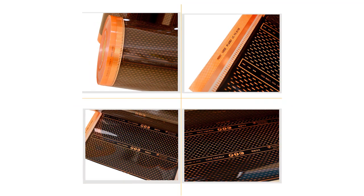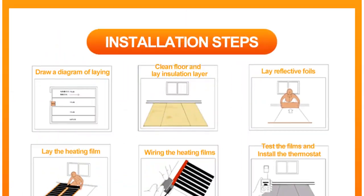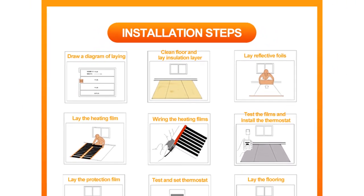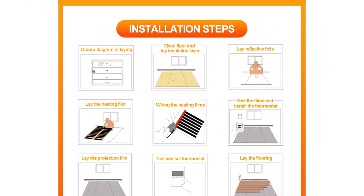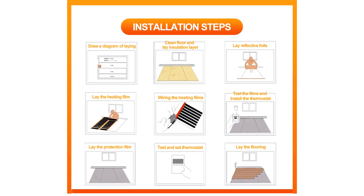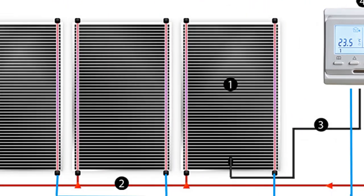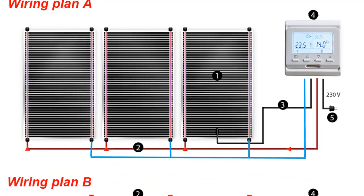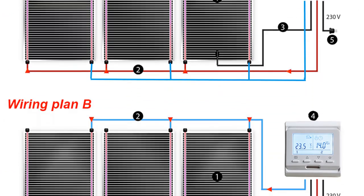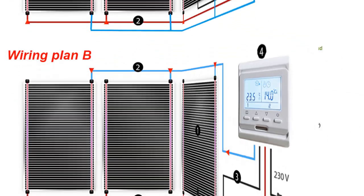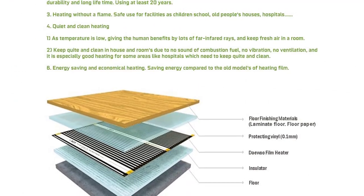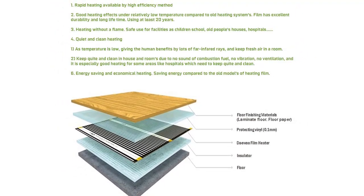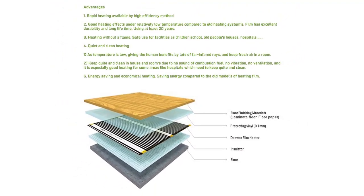The PTC heating film is a new type of updated warm floor product based on ordinary heating film. It uses a unique PTC positive temperature coefficient material that is highly efficient and provides exceptional comfort. The PTC material is self-regulating, meaning it automatically adjusts its output to match the needs of the space, making it highly energy efficient. And because it doesn't rely on water or other fluids, it eliminates the risk of leaks or other problems associated with traditional radiant floor systems.